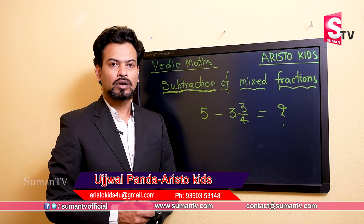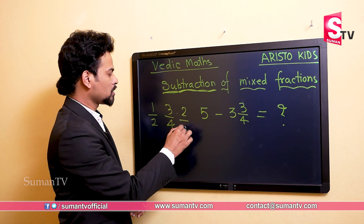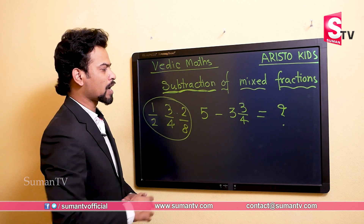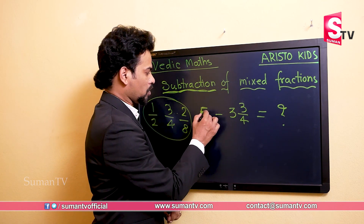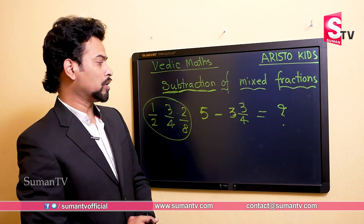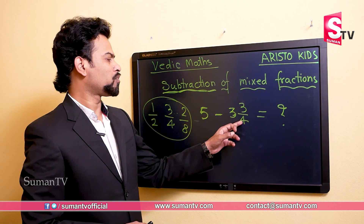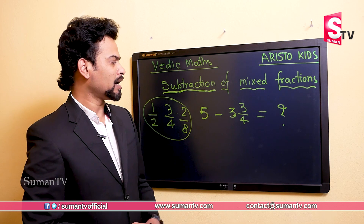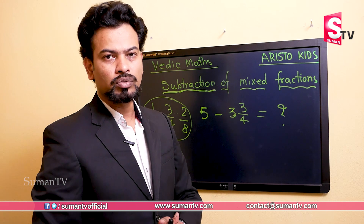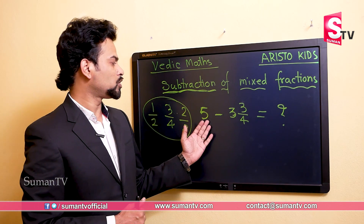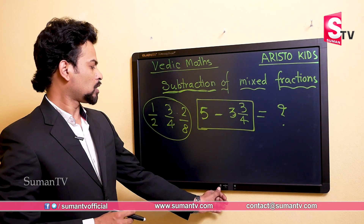All of you know fractions — fraction means one by two, three by four, two by eight, these are all called fractions. Let's take an example: suppose we need to subtract five minus three and three by four. Generally what we do is multiply four into three to get twelve, then subtract — it's a very long process. Today I am going to tell you a very easy technique by which you can solve this kind of problem very easily.